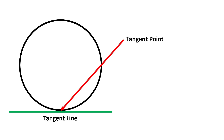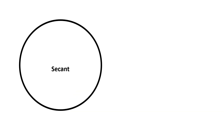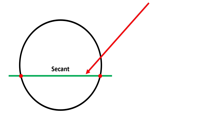A secant is a straight line that passes through a circle and intersects the circle at two points. A secant never ends on a circle — it only passes through two points on a circle.